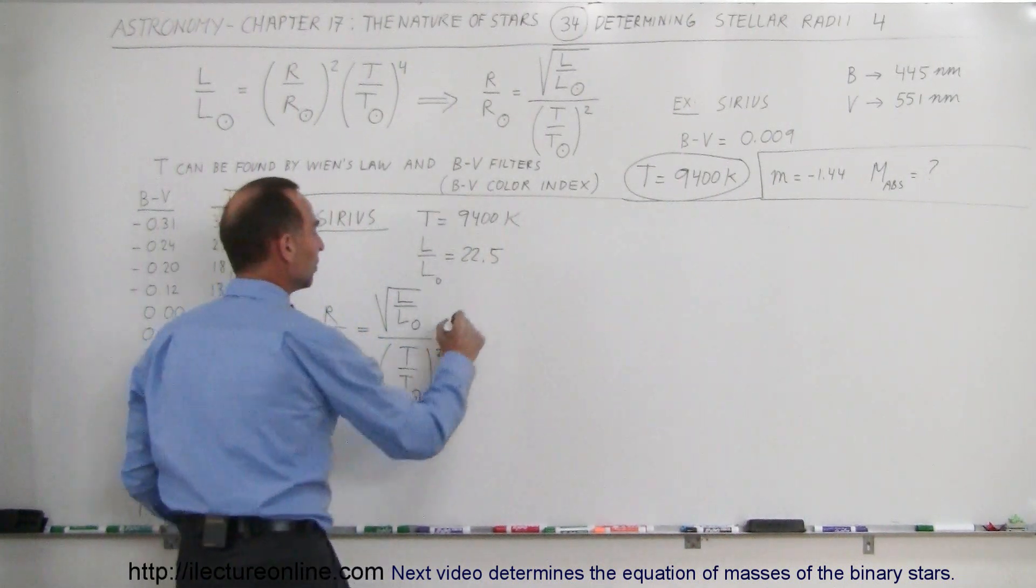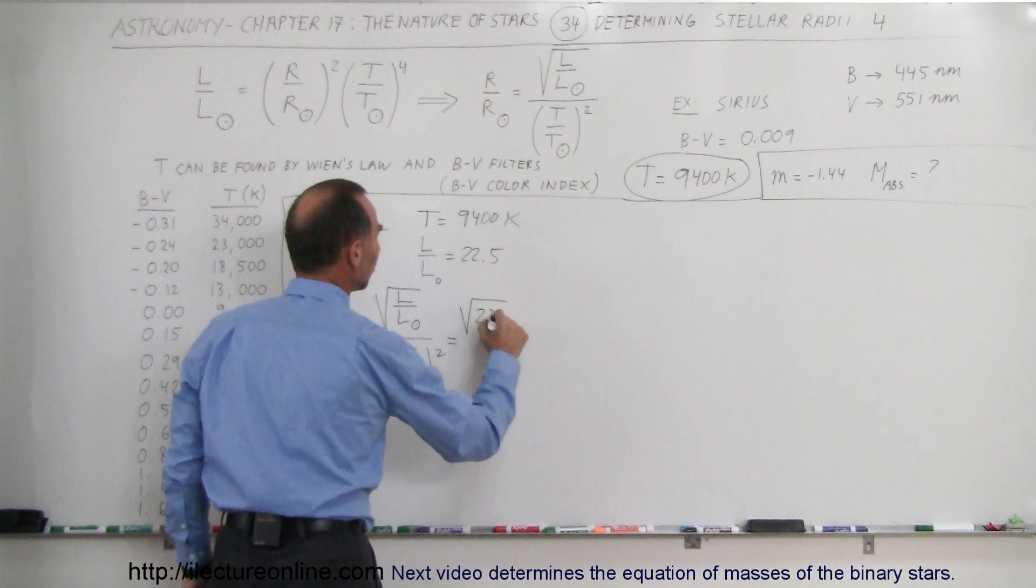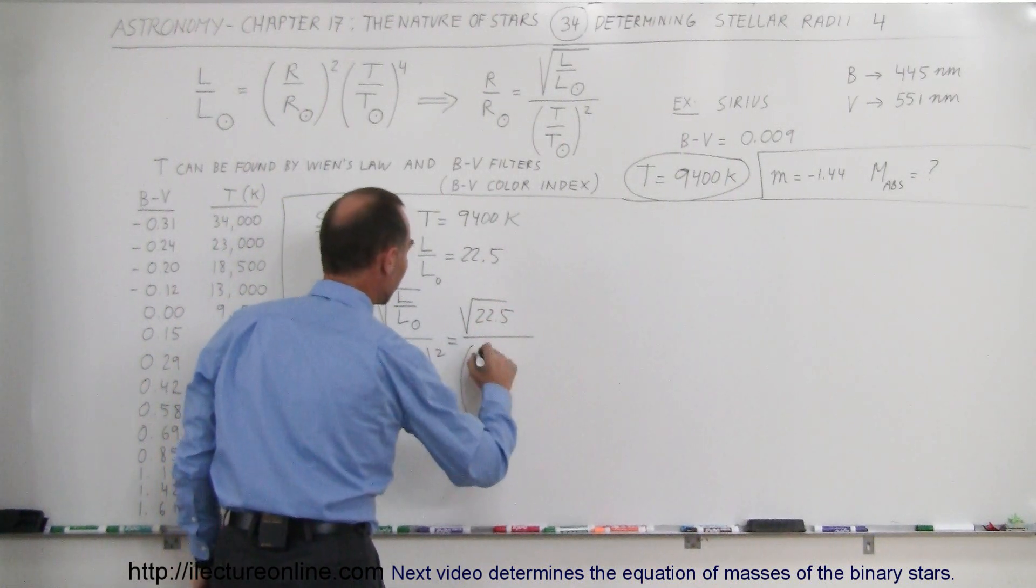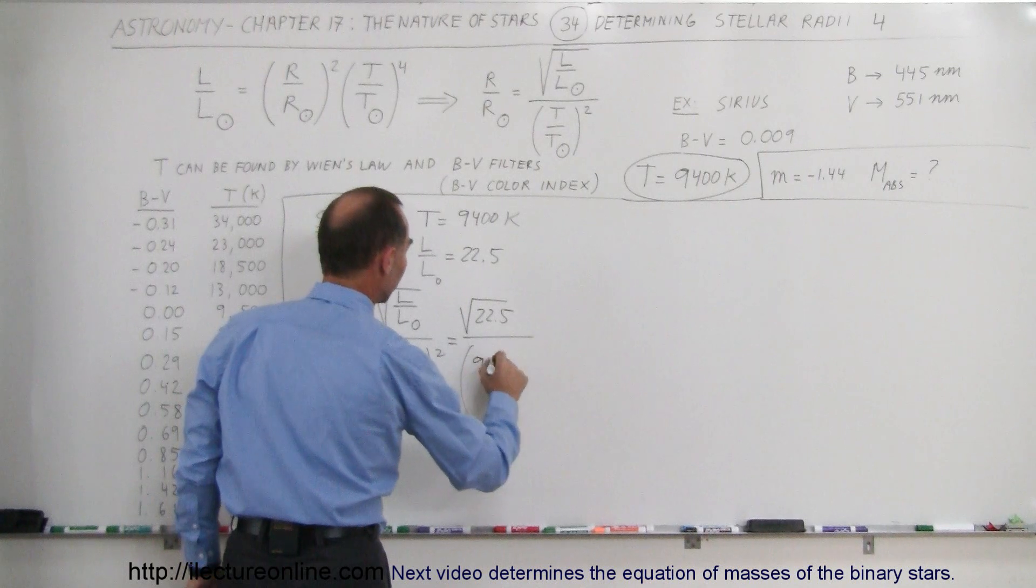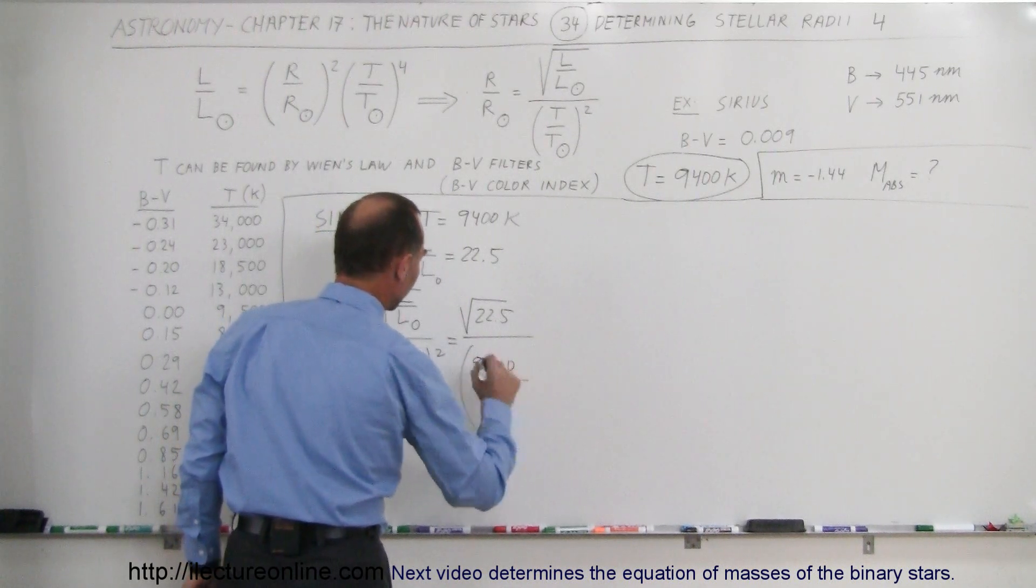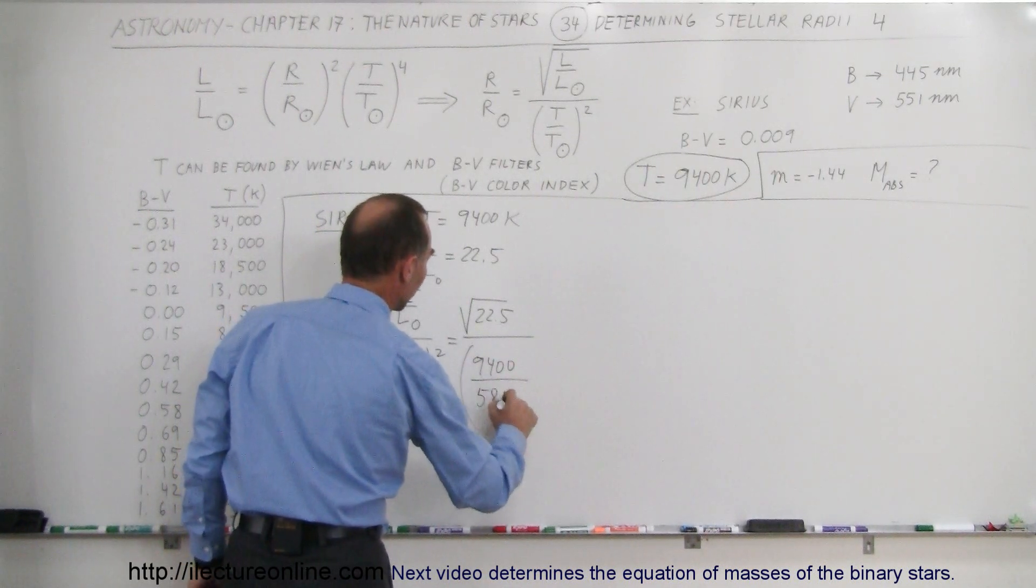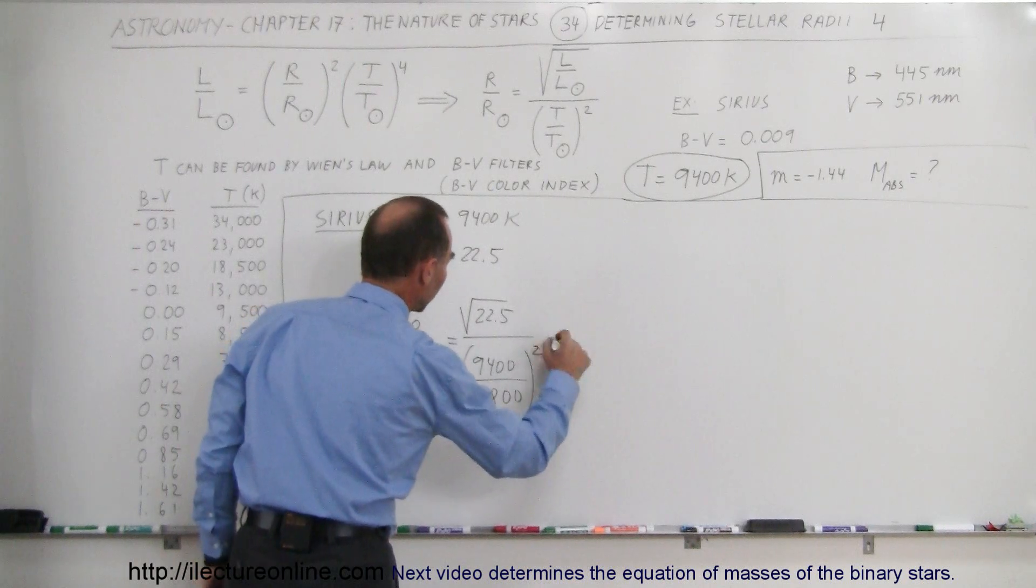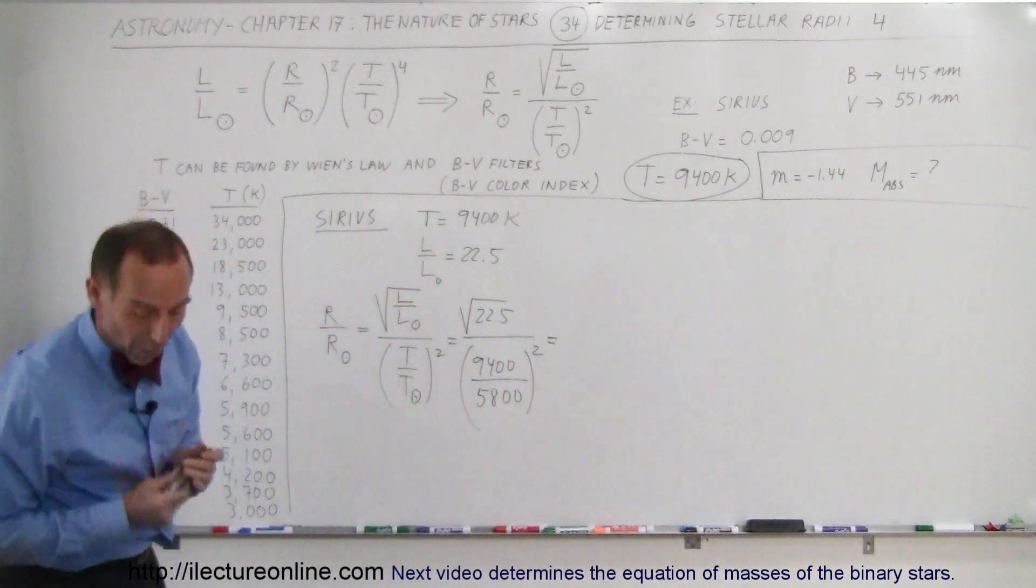So in this case it would be the square root of 22.5 divided by the quantity 9400, which is the surface temperature of Sirius, divided by 5800, the surface temperature of the Sun, quantity squared, and let's see what we get.